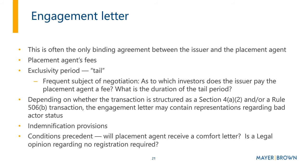The issuer typically reimburses the agent's fees and expenses. A frequently negotiated part of the engagement letter is the tail period — where the issuer agrees to pay the agent a fee if other offerings occur within a future time period. Depending on the transaction exemption — whether 4(a)(2) or Reg D — there may be bad actor representations. There's also indemnification, where the issuer agrees to indemnify the agent for untrue statements in the offering documents.